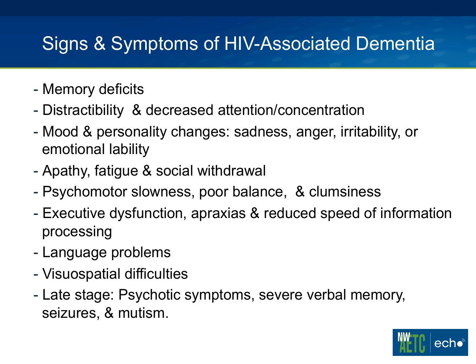Signs and symptoms include decreased attention and concentration, and mood and personality changes — patients appear sad, angry, irritable, with emotional lability, apathy, fatigue, social withdrawal, psychomotor slowing, poor balance and clumsiness, and executive dysfunction. They also have visual-spatial difficulties, which we test by having them draw a cube. In late stages, there are psychotic symptoms, more severe verbal memory problems, seizures, and mutism.